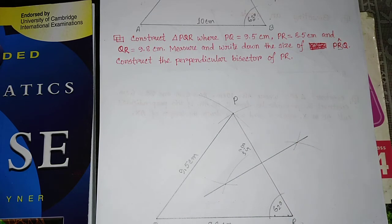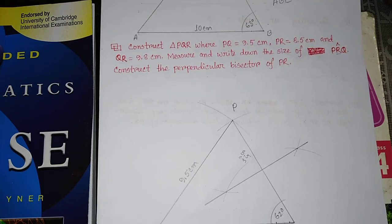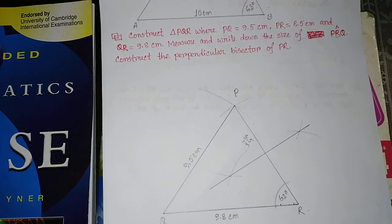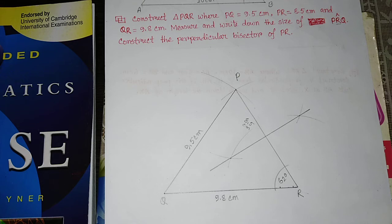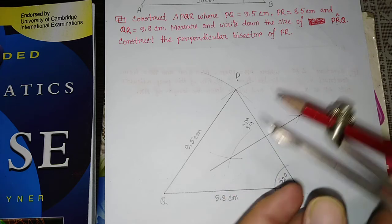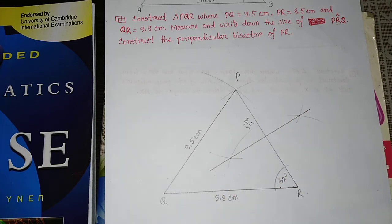So that was my construction. According to the question, you have to practice the construction. You can practice the construction, which includes the angle bisector, line segment bisector, triangle construction, and so on. These constructions are easy to do with practice.